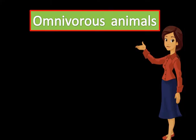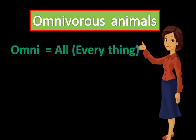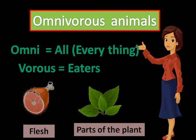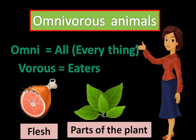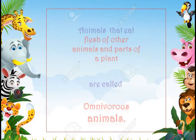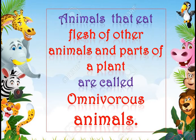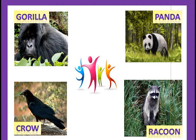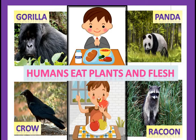Now let's do the third category — omnivorous animals. Omni means all or everything, and vorous means eaters. The animals which eat either parts of the plant and can also eat flesh of animals are called as omnivorous animals. For example, bear, crow, rat, gorilla, raccoon, panda etc. Also, humans are omnivorous animals because humans can eat all the parts of the plant and they eat meat also.